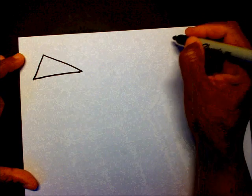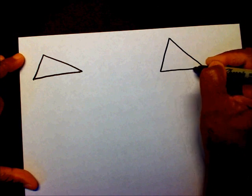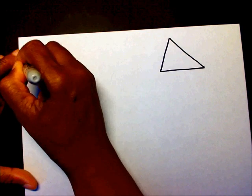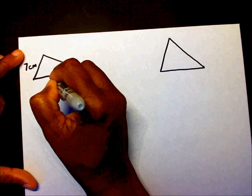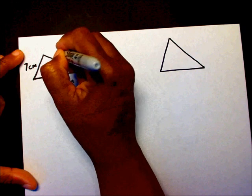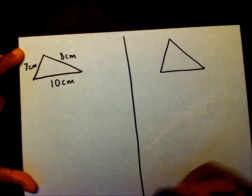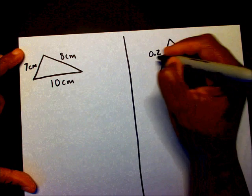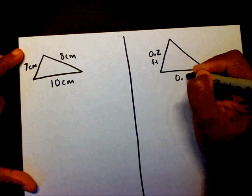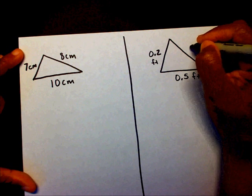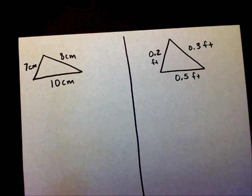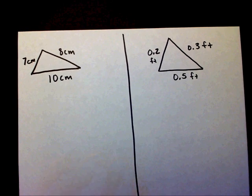Let me give you two to work. One triangle — this side is seven centimeters, this side is ten centimeters, and this side is eight centimeters. And for the other one, this side is zero point two feet, this side is zero point five feet, and this side is zero point three feet. Please pause the video and find the perimeter of those two triangles.